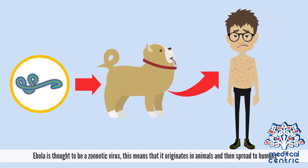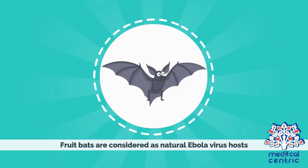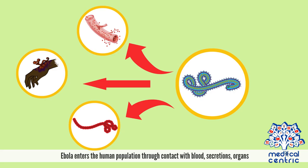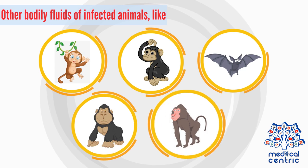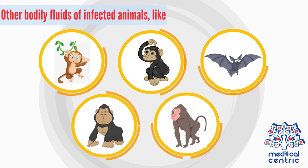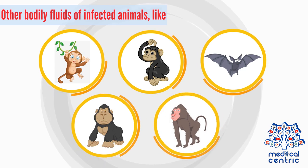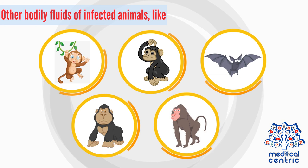Ebola is thought to be a zoonotic virus, meaning it originates in animals and then spreads to humans. Fruit bats are considered the natural Ebola virus hosts. Ebola enters the human population through contact with blood, secretions, organs, or other bodily fluids of infected animals such as monkeys, chimpanzees, fruit bats, gorillas, and baboons.